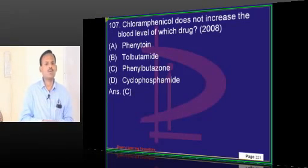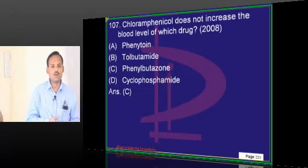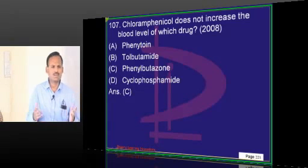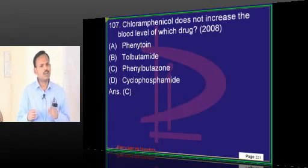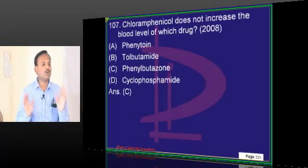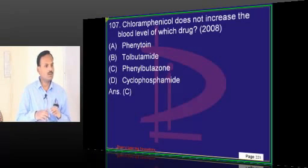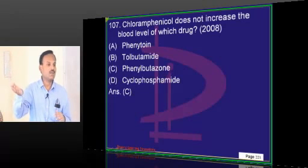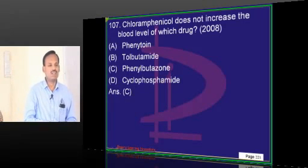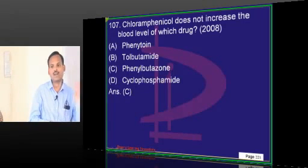Chloramphenicol is broad spectrum — covering both aerobes, anaerobes, gram positive, gram negative. The problem is bone marrow depression and, after therapy is completed, risk of leukemia. That is why it is an orphan drug in most countries.